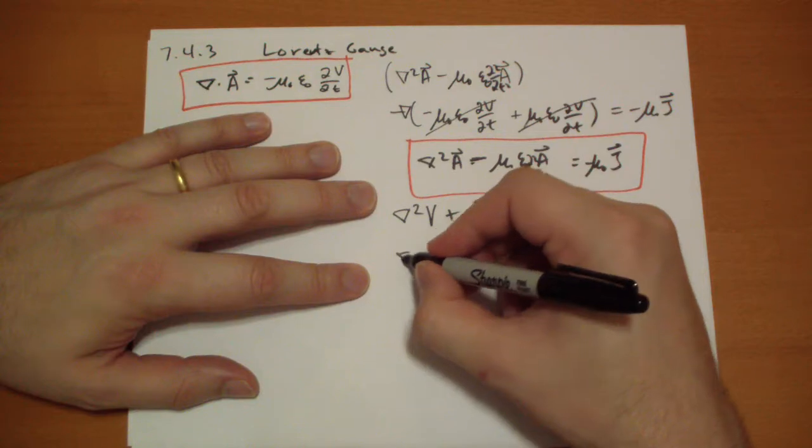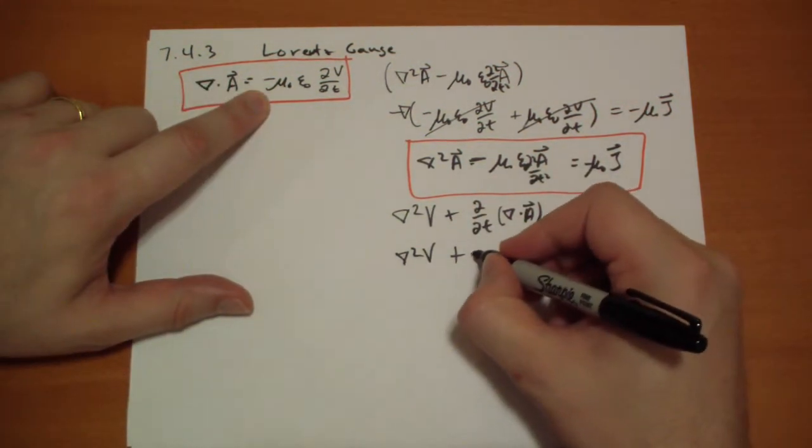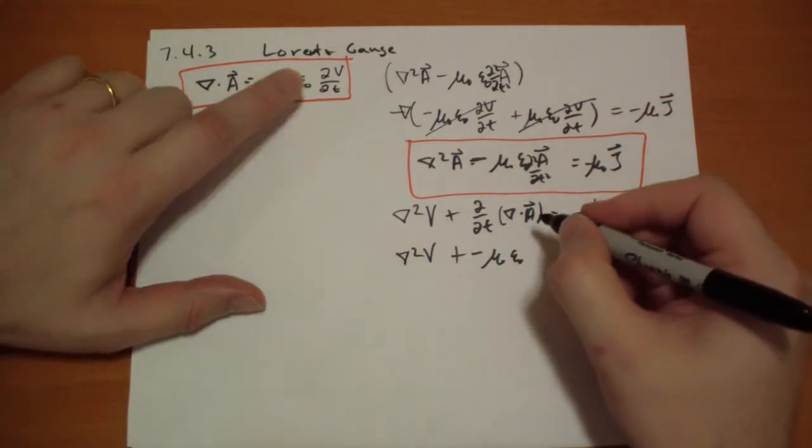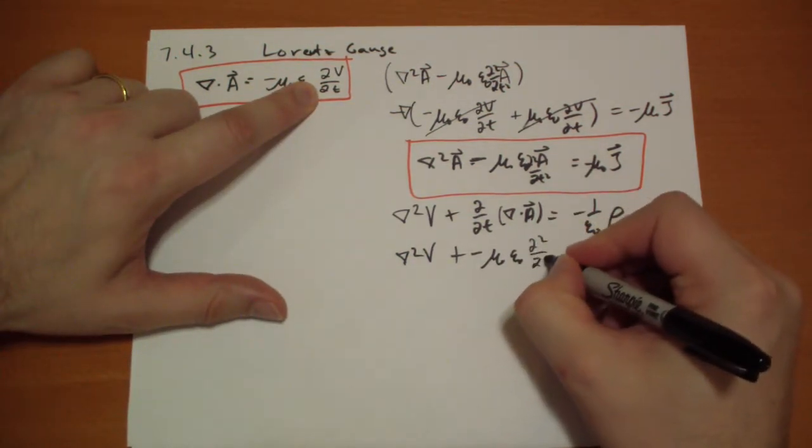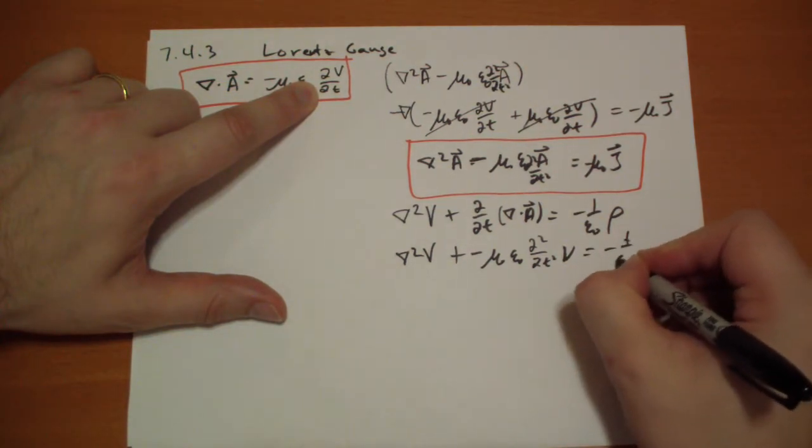Now we have the Laplacian of V plus the time derivative minus mu naught epsilon naught, the second time derivative of V is equal to minus 1 over epsilon naught rho.